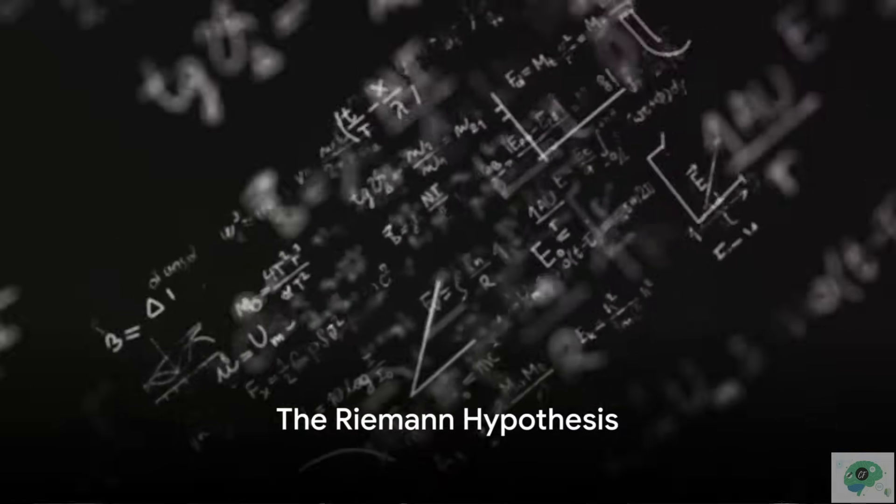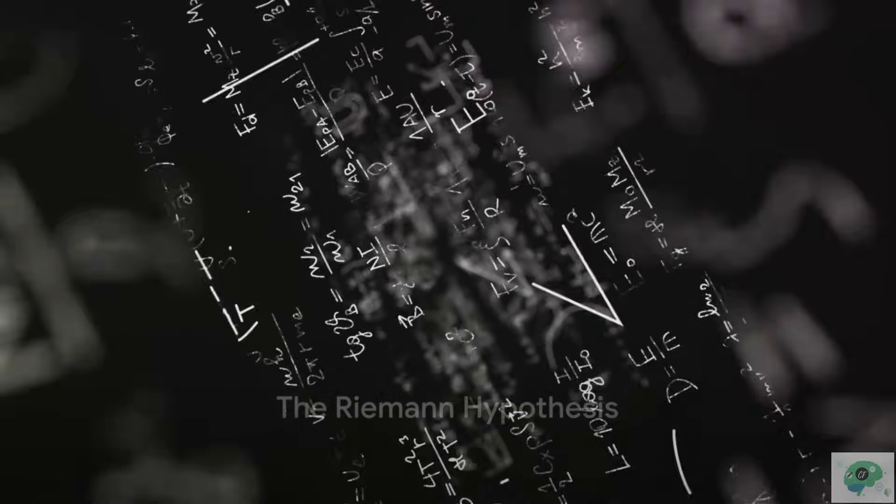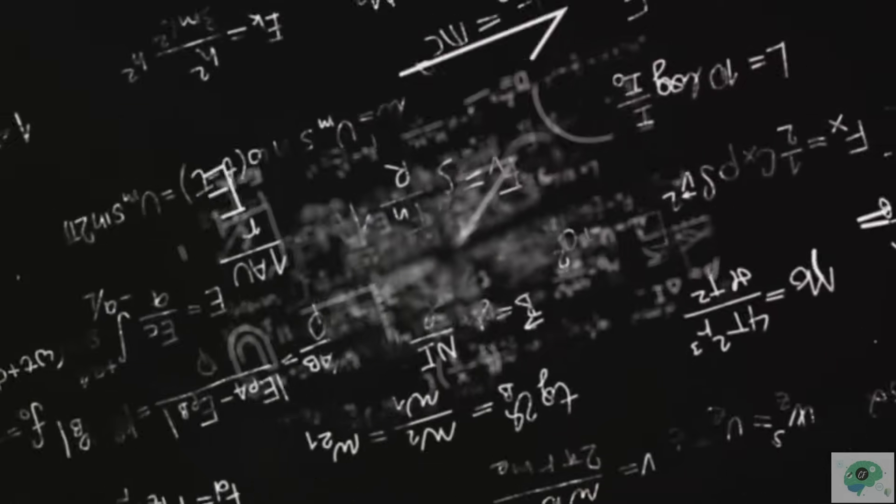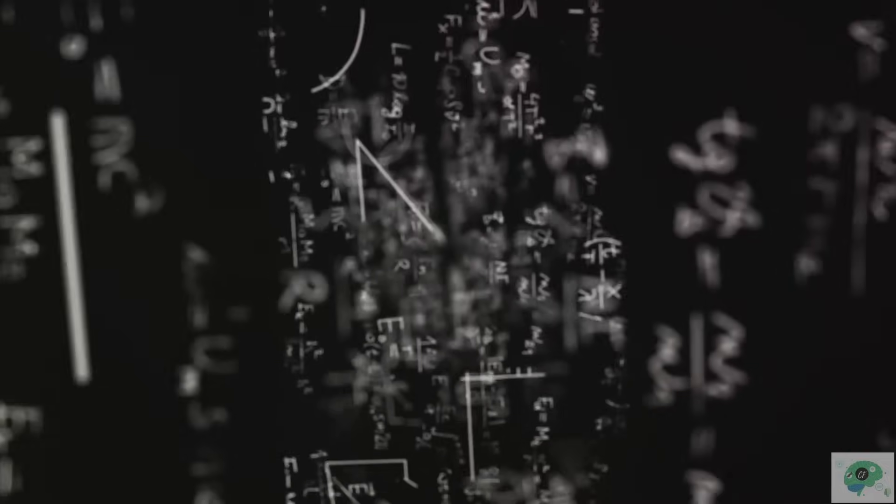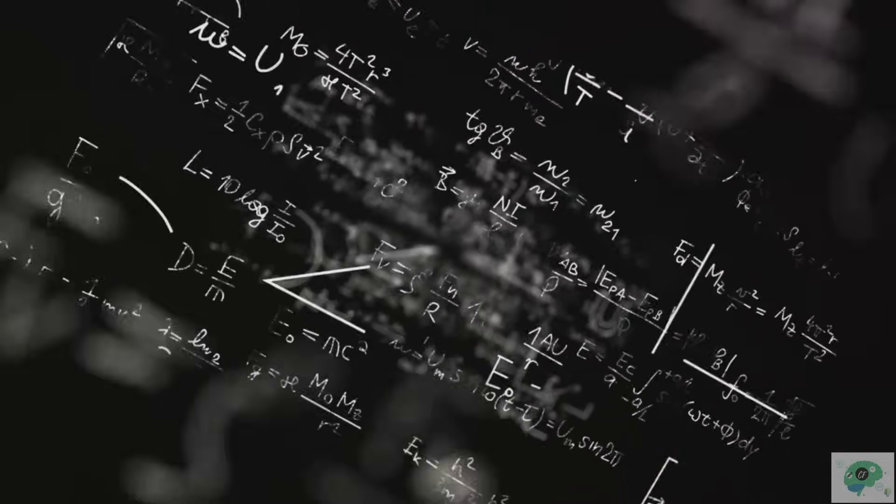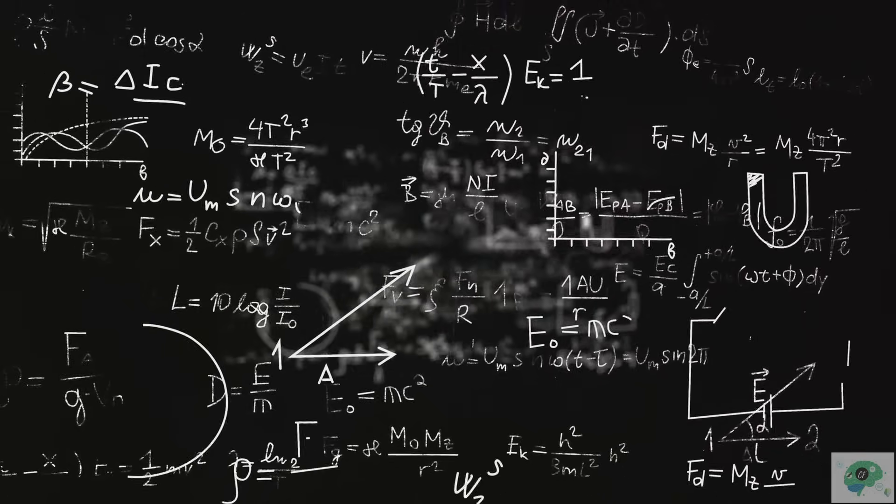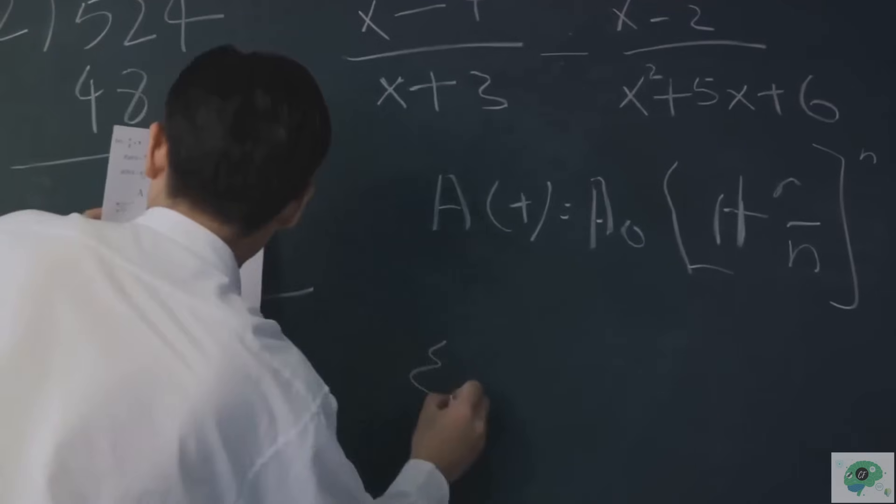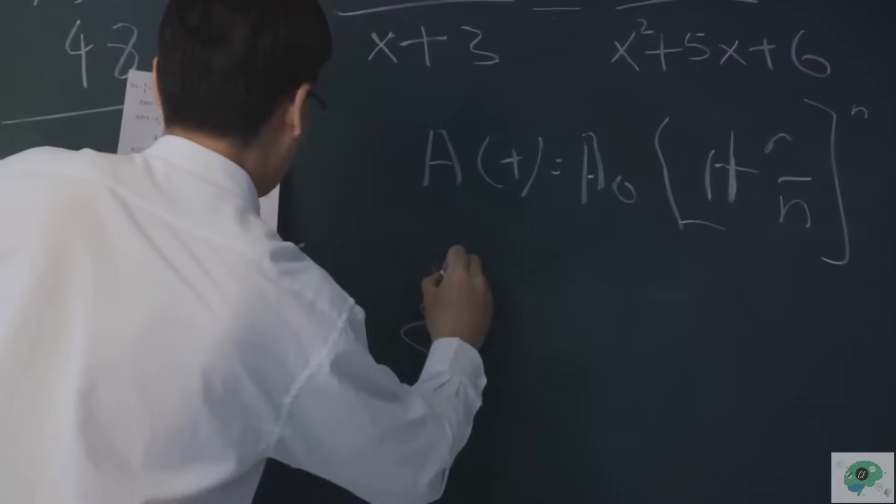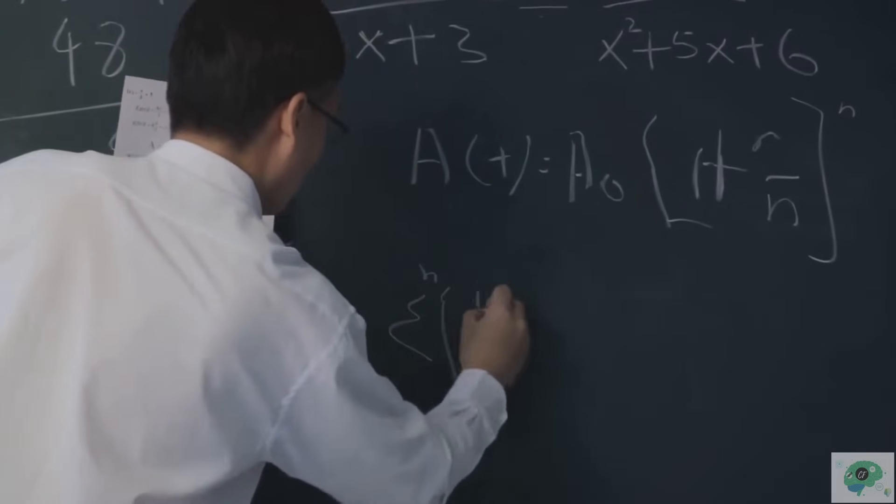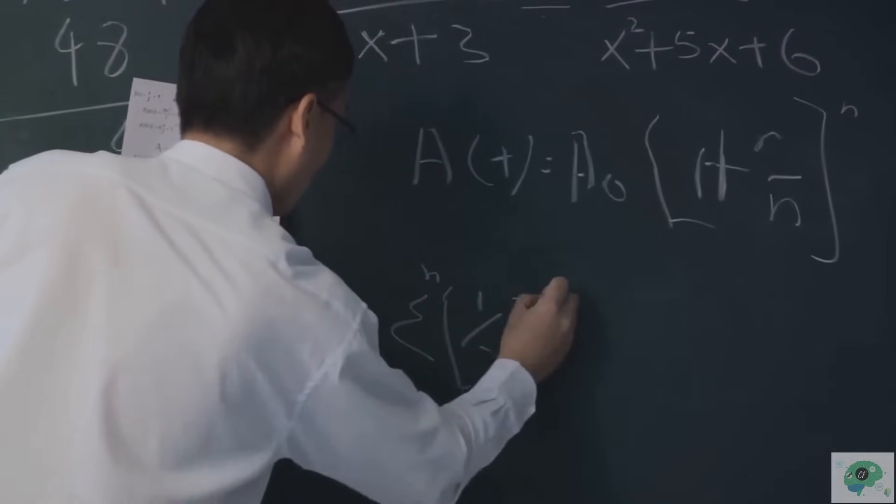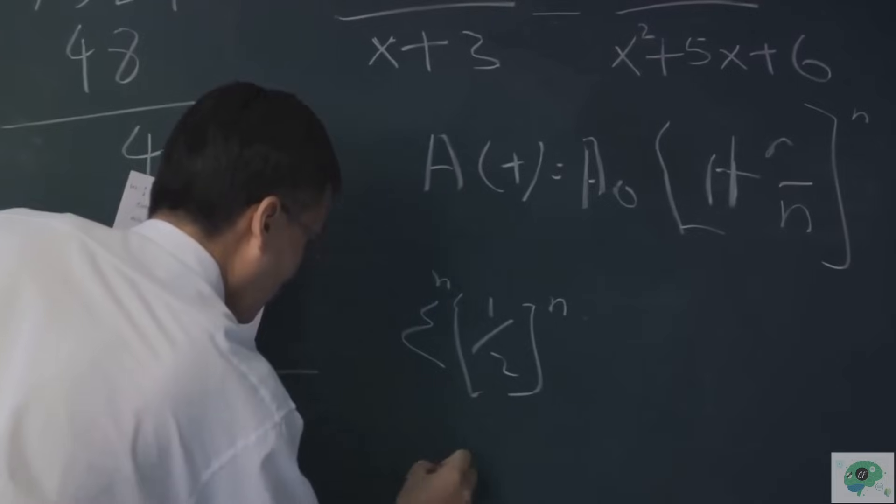In the world of number theory, the Riemann hypothesis reigns supreme. This hypothesis, proposed by Bernhard Riemann in 1859, has to do with the distribution of prime numbers, those unique figures that can only be divided by one and themselves. Riemann hypothesized that the zeros, or solutions, of the Riemann zeta function, a complex mathematical function, have a certain pattern.